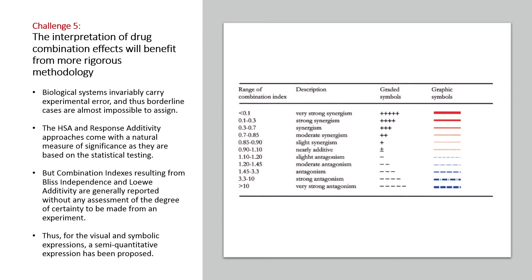The highest single agent and response additivity approaches come with a natural measure of significance, as they are based on the statistical testing of the combination effect against the maximum individual effect. But combination indexes resulting from Bliss independence and Loewe additivity are generally reported without any assessment of the degree of certainty to be made from an experiment. These approaches lack the theoretical framework to allow for a direct statistical inference. Thus, for visual and symbolic expressions, a semi-quantitative expression has been proposed.